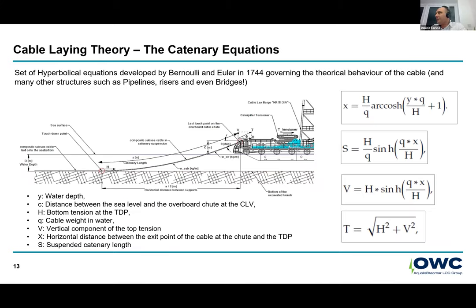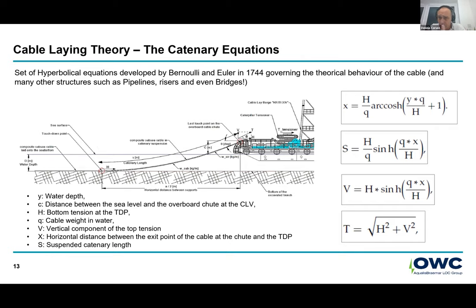To date, even the most modern software and advanced cable laying technology applications are still using the good old catenary equation developed by Bernoulli and Euler in 1744. This equation governs the behavior of a linear structure — which in this case is a cable, but could easily be a pipeline, a riser, or a bridge. So this hasn't changed. These are still the key elements of consideration that drive the feasibility of installing a linear infrastructure such as a cable.